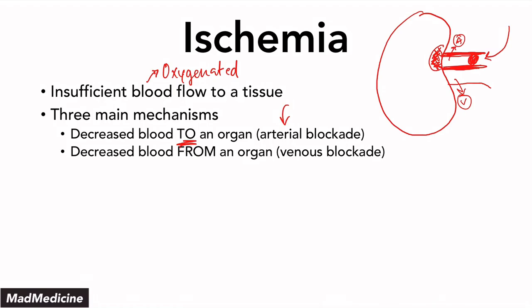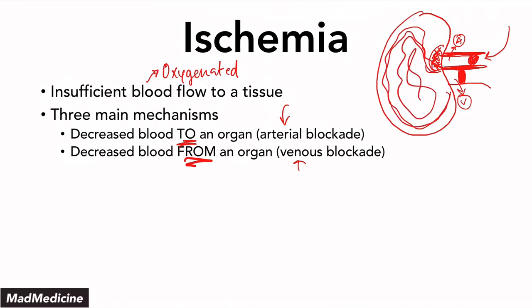Another way of causing ischemia is decreasing blood leaving an organ — a venous blockade. If the main vein is blocked, you're going to have a back-pressure build-up of blood. That back-up causes the arterial blood coming into the kidney to get backed up as well, resulting in another cause of ischemia. You're not getting enough oxygenated blood to the tissue because of decreased blood leaving the organ — a venous blockade.